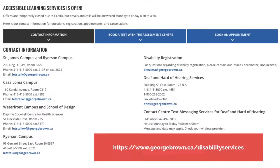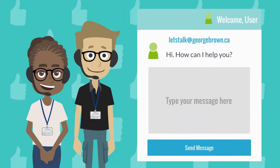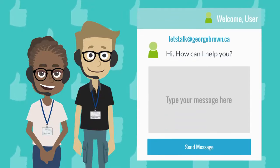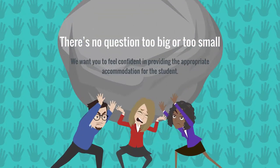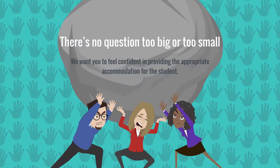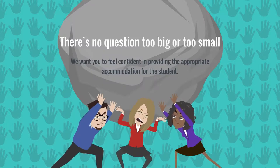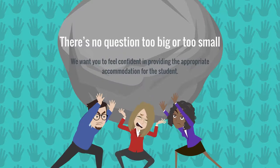If you have a question or concern, please don't hesitate to contact us. You can find the assigned accessibility consultant at the top of the accommodation letter, or contact letstalk@georgebrown.ca. There's no question too big or too small, and we want you to feel confident in providing the appropriate accommodation for the student.